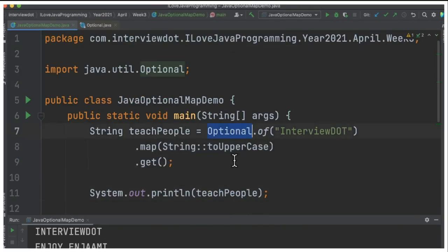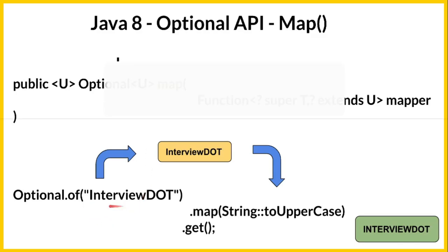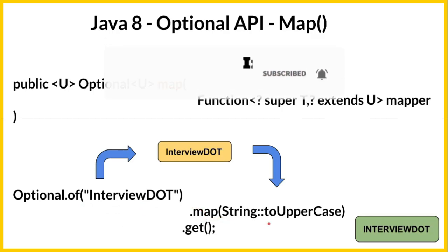Now that we know what an Optional object is, let's look at the map method. Here we can see the signature for the map method — it takes a function as an argument and then returns an Optional value. In this example we are going to create an Optional value and call the map method, which takes a lambda as an argument.